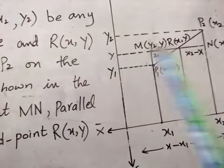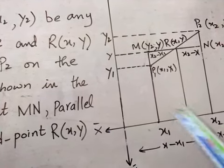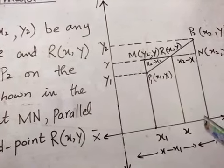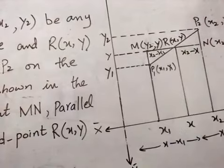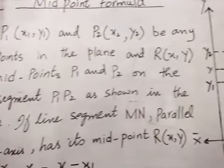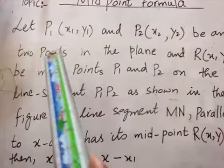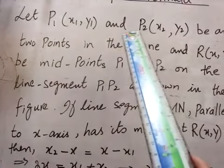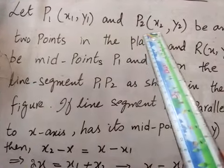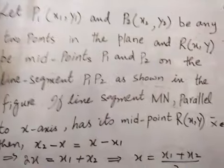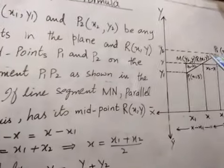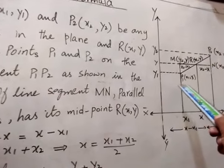If line m-n is parallel to the x-axis, and lines through P1 and P2 are parallel to the y-axis, then let P1 be the first point with coordinates x1 and y1, and P2 be the other point with coordinates x2 and y2, as any two points in the plane.